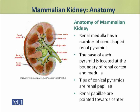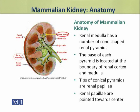The renal medulla has a number of cone-shaped renal pyramids. The base of each pyramid is located at the boundary of the renal cortex and renal medulla, while the tips of these conical pyramids are called renal papillae, which are pointed toward the center.